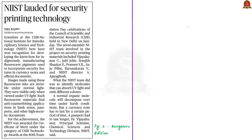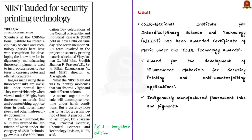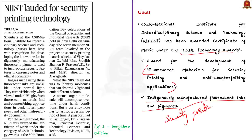Our next discussion is science and technology based. The news article mentions that CSIR-NIIST (National Institute for Interdisciplinary Science and Technology) won a Certificate of Merit under the CSIR Technology Awards. The award was given for the development of fluorescent materials for security printing and anti-counterfeiting applications. A group of scientists at NIIST indigenously manufactured fluorescent inks and pigments with applications in security printing.